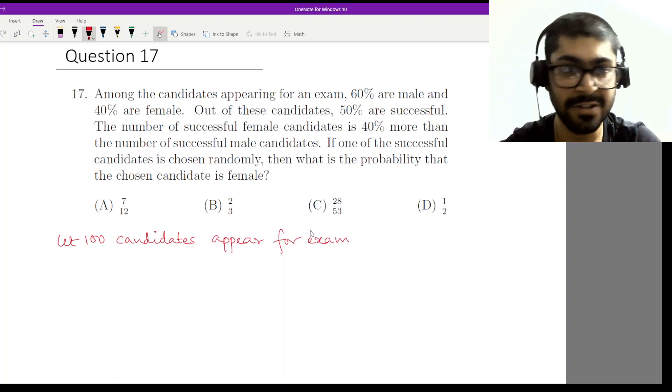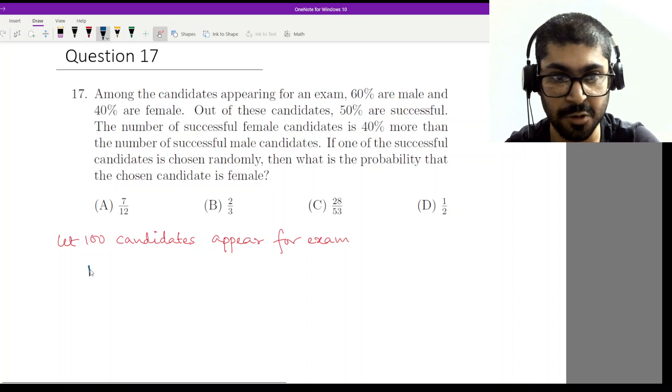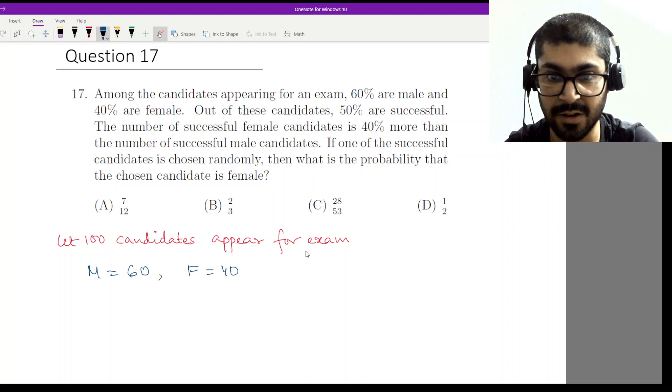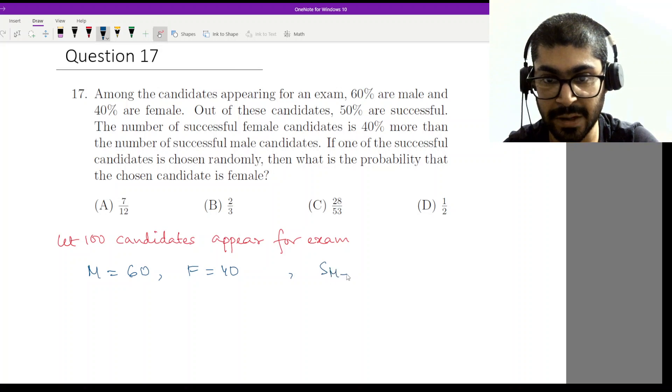Once you have done this, then you can calculate the ratios quite easily. So number of males would be 60 and F would be 40. Fifty are successful, so successful both male and female, right, that is 50.